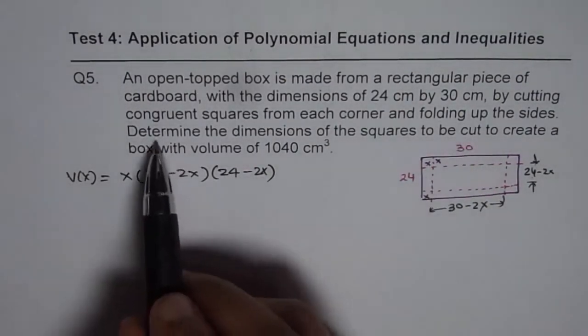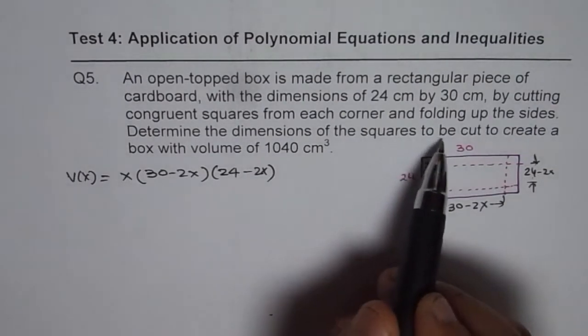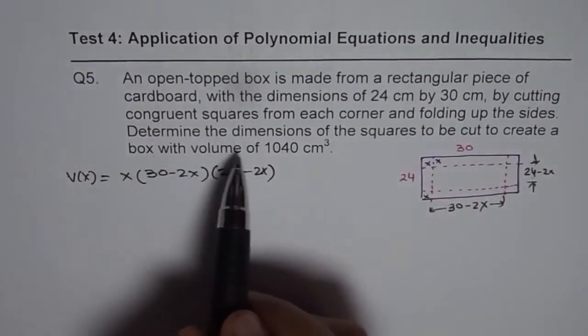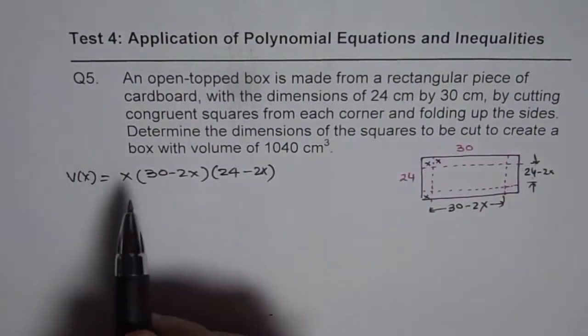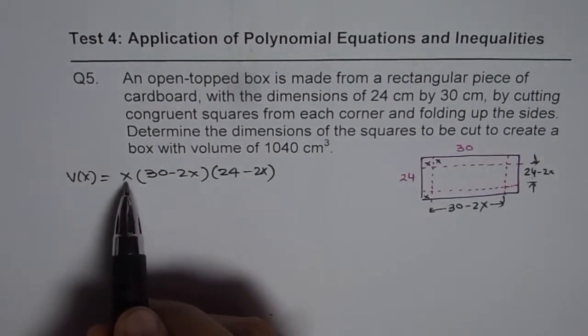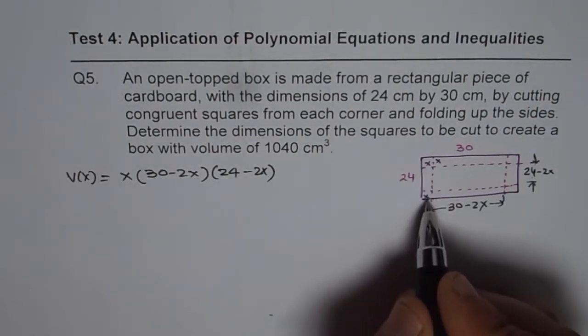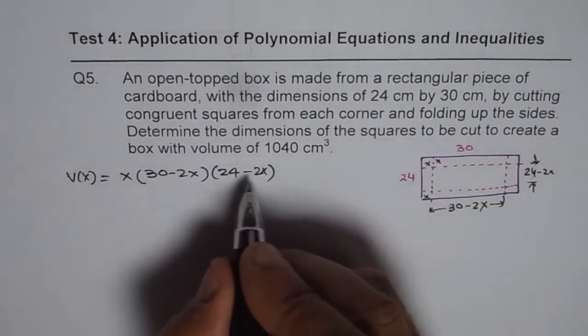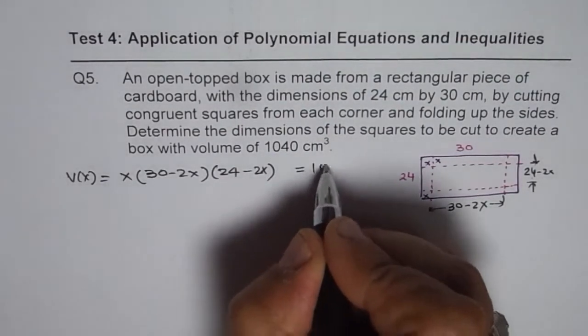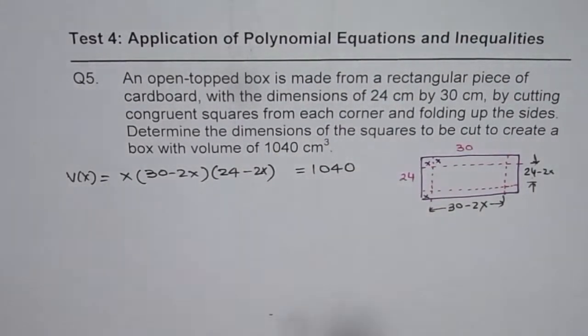Now, the question says, determine dimensions of the squares to be cut to create a box with volume of 1040. So, we need to find the value of x, then we get the dimension of the squares for volume of 1040. So, we can equate this to 1040.